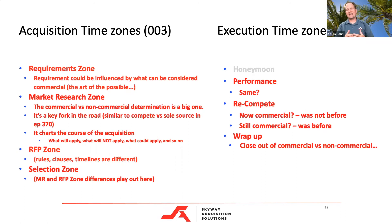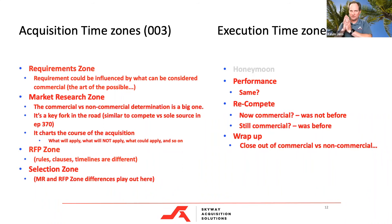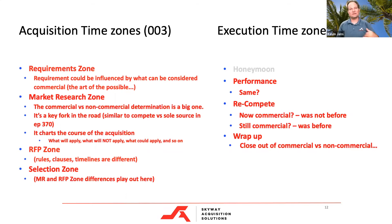In the RFP zone, using FAR Part 12, there's a limited number of clauses that can be included. FAR Part 15, which is non-commercial, has a much larger chunk of clauses. The timelines are going to be longer, and the rules about how long I give you to respond are very different. During the selection zone, how it plays out is driven by what happened in the market research and RFP zones — specifically the determination to go with commercial versus non-commercial.